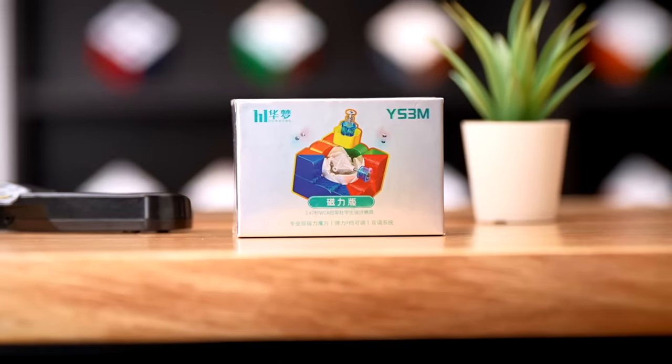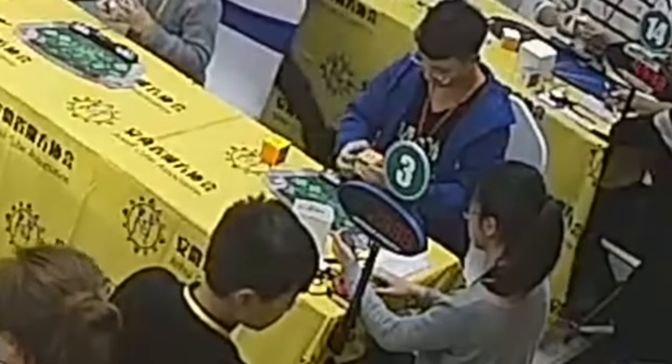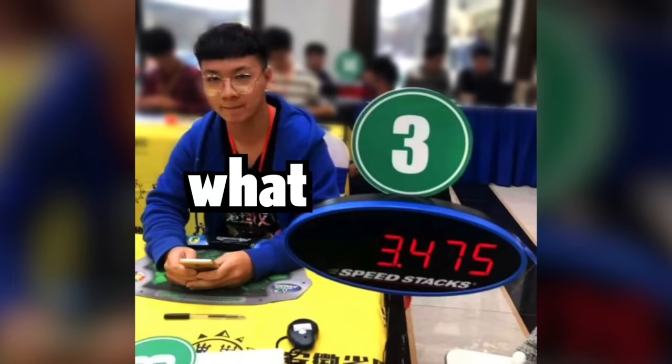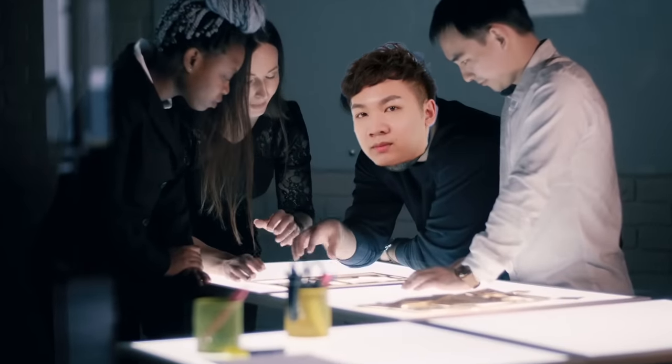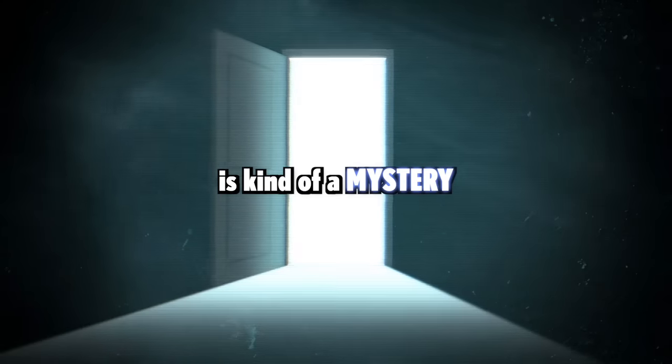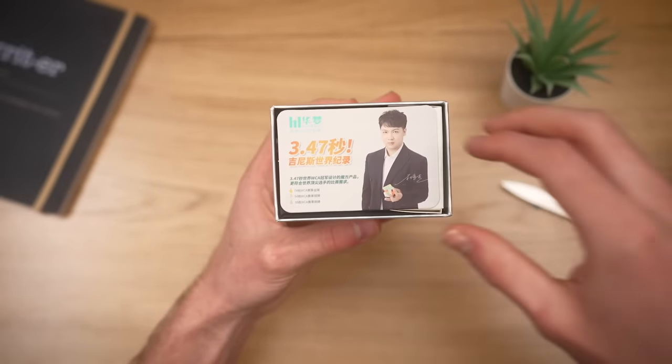The Huameng YS3M is a collaboration between Moyu and Yusheng Du, the current Rubik's Cube World Record holder of 3.47 seconds. But what he actually contributed to the development of the cube is kind of a mystery, and I'm pretty positive that it is mostly a marketing stunt.